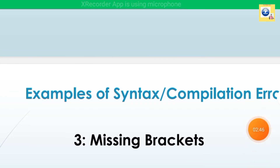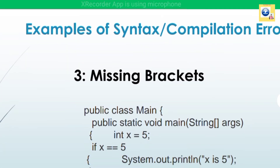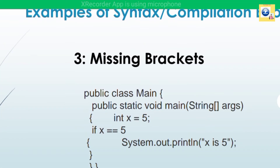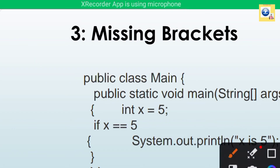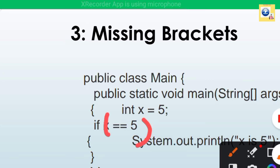Let's look at one more example of a compilation error: missing brackets. In this example with 'public class main' and 'public static void main', the 'if' statement is missing its required parentheses. That missing parenthesis is what causes this compilation error.